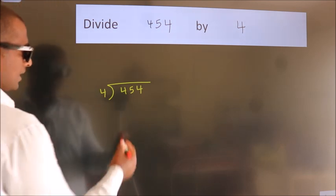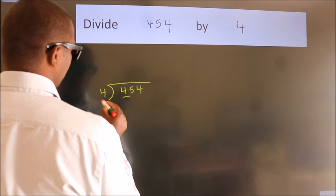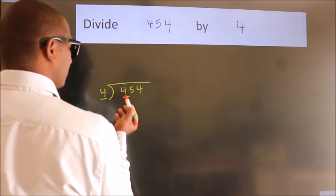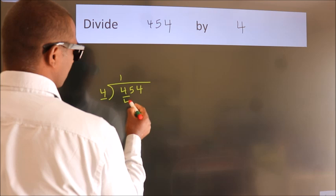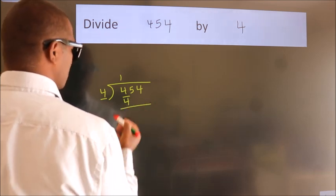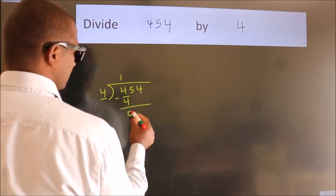Next. Here we have 4, here 4. When do we get 4? In 4 table, 4 once, 4. Now, we should subtract. We get 0.